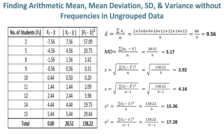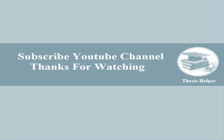The variance value without frequencies in Formula 2 is 17.28.